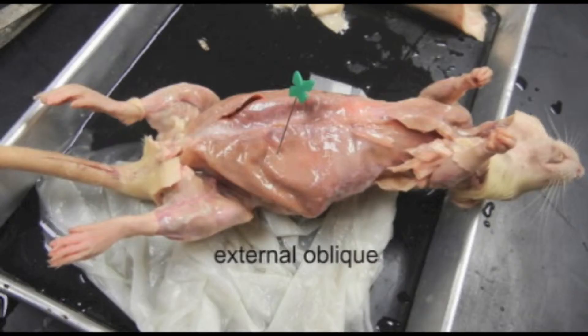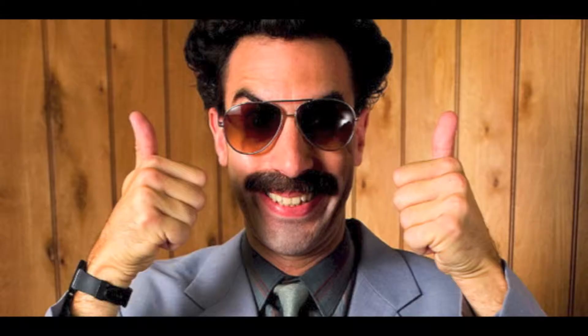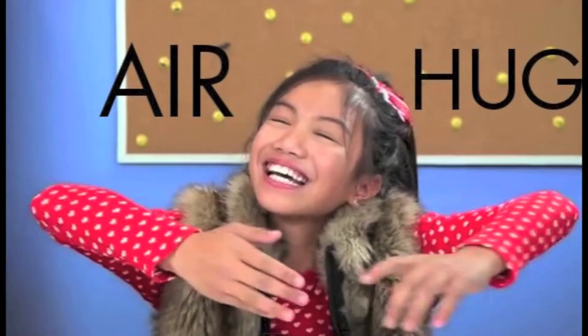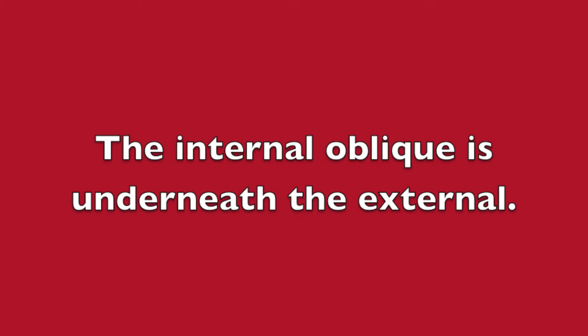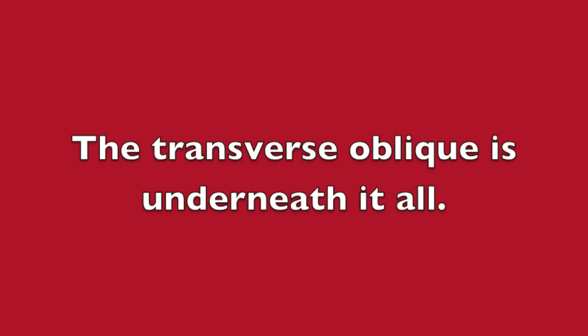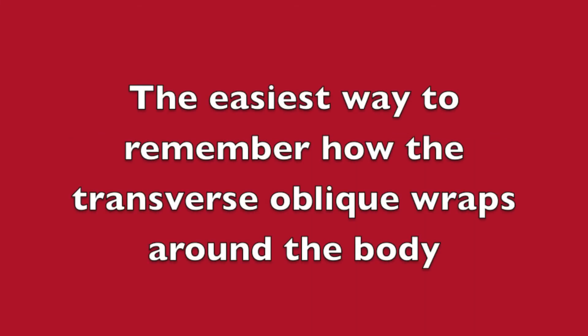Unfortunately there are not a lot of images of the rat's core. Fortunately, I have come up with a way to easily remember where the muscles are. The external oblique is the most external — it wraps around the body the same way this girl is hugging the air. The internal oblique is underneath the external; it wraps around the body the same way that this girl is doing the bicep machine. The transverse oblique is underneath the other obliques; the easiest way to remember how it wraps around the body is just to remember a guy with his hands in his pocket.